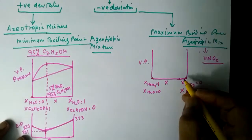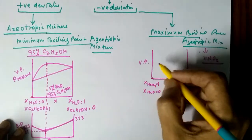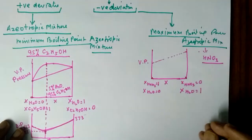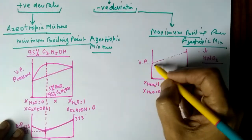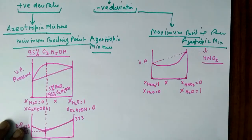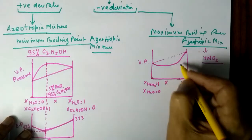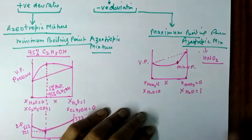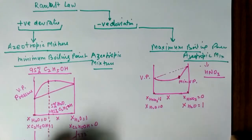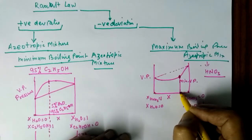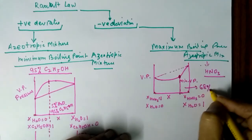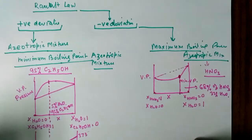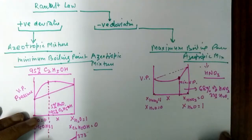Only water is present at one end. The vapor pressure graph according to Raoult's law would be a straight line, but this is not an ideal solution — there is negative deviation from Raoult's law. So the actual vapor pressure curve dips below the ideal line, showing a minimum vapor pressure. At the point of minimum vapor pressure, the azeotropic mixture has a composition of 68% HNO₃ and 32% water.